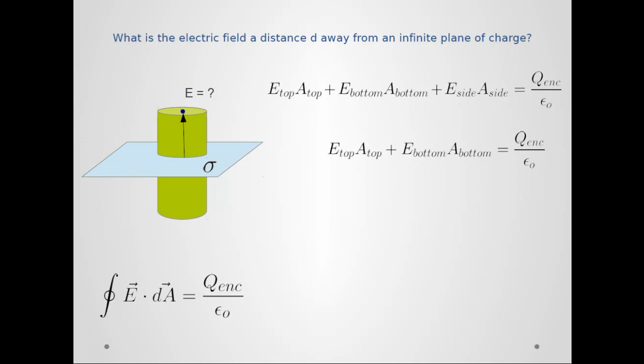Now let's look at these two terms. I can draw my cylinder in such a way that it is a distance d above the plane and a distance d below the plane. Thus, the electric field at the top and the bottom have to be the same by symmetry.